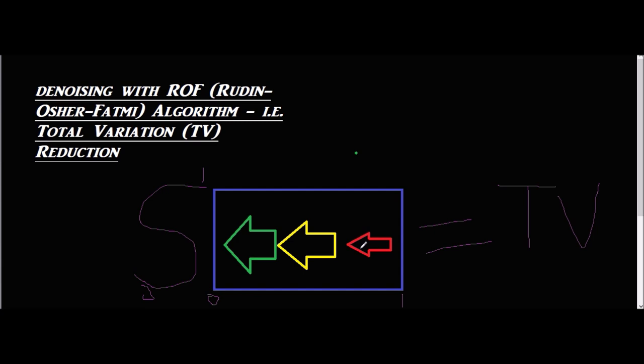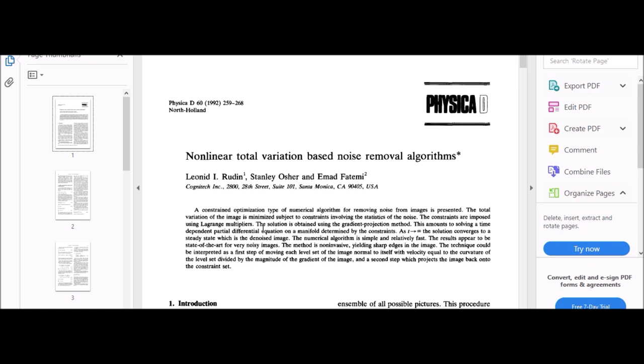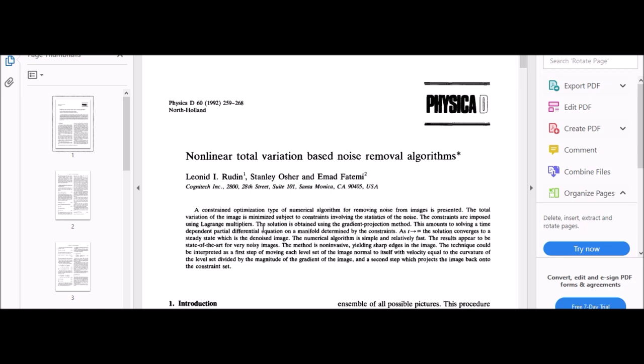In effect, a lot of the algorithms which work with denoising in mind are an effort to reduce the total variation in the image domain. For the ROF algorithm, we have to do a little bit of literature review and go back to the origin of the model, looking at the paper first published in 1992 by Rudin, Osher and Fatemi themselves.